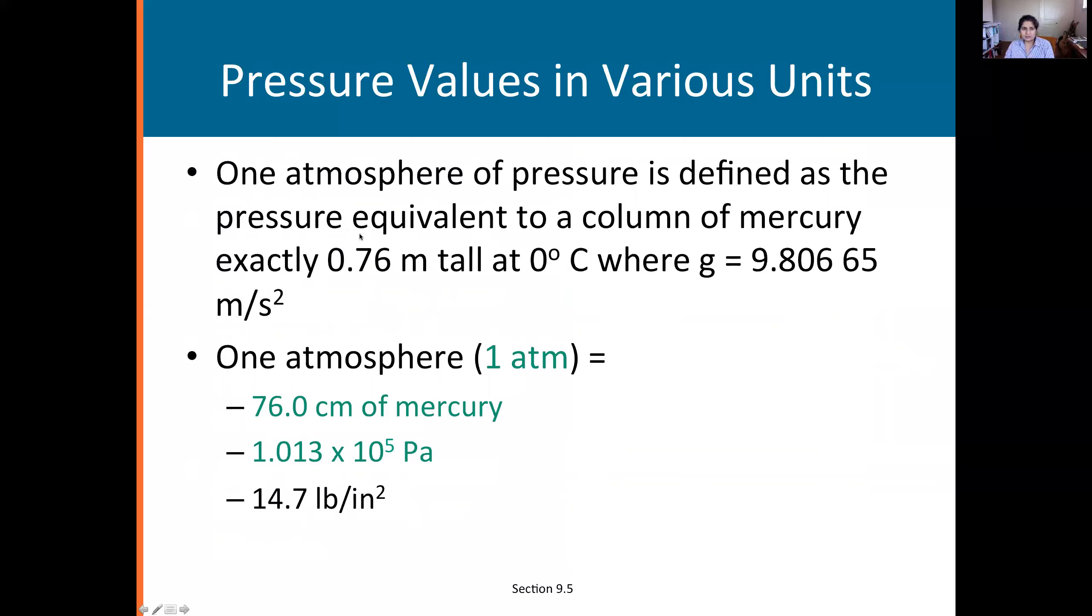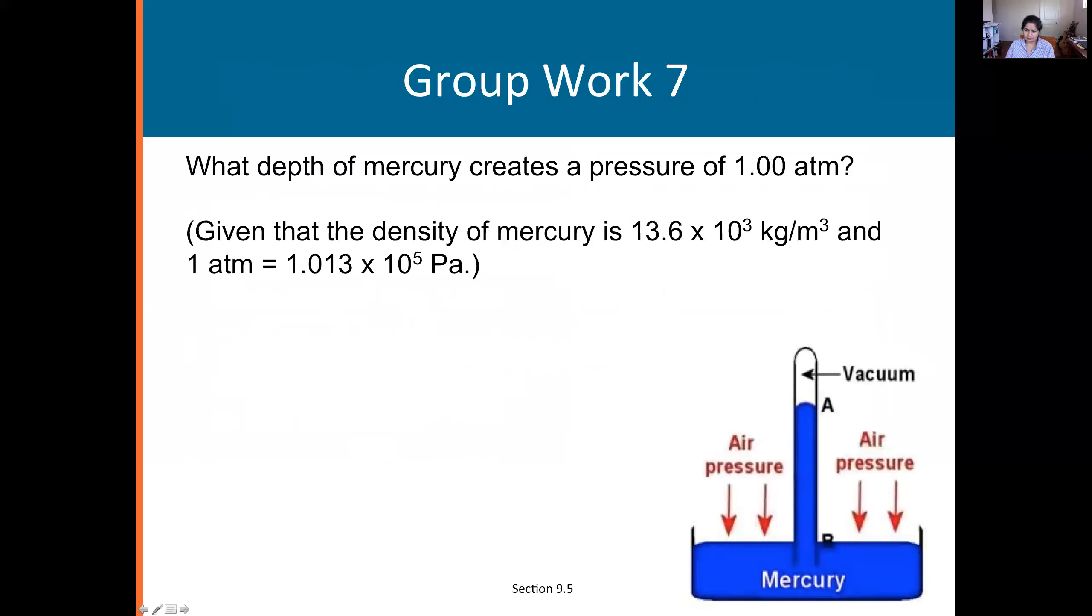One atmosphere of pressure is defined as the pressure equivalent to a column of mercury exactly 0.76 meters tall at zero degrees Celsius. You're going to calculate that in this question.